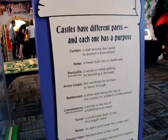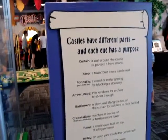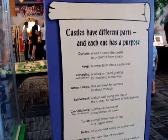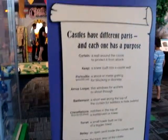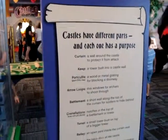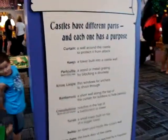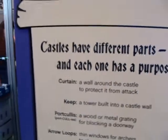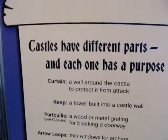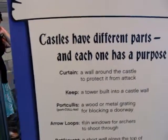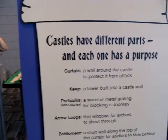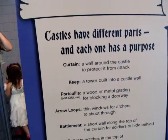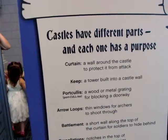I'm at the Discovery Science Center and they're talking about the different kinds of parts of the castle. Since I plan at some point to make my own castle, I will share with you what they're talking about. There are the different parts of the curtain — the wall around the castle to protect it from attack.